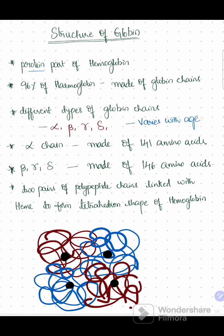Structure of globin. It is the protein part of hemoglobin. 96% of hemoglobin is made of globin chains.